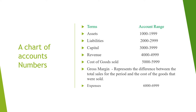Capital account numbers range from 3,000 to 3,999. Revenue accounts range from 4,000 to 4,999. Cost of goods sold accounts range from 5,000 to 5,999.